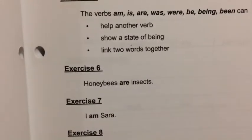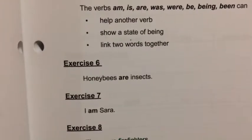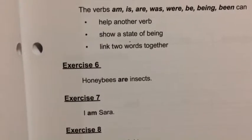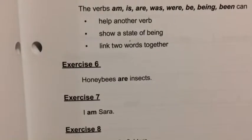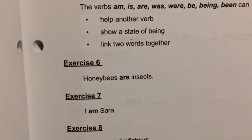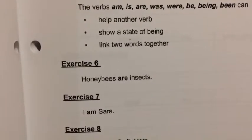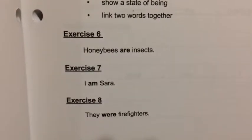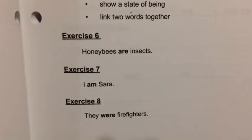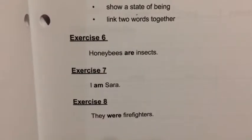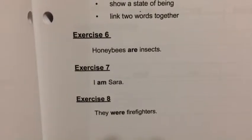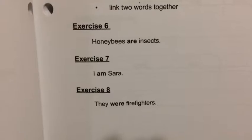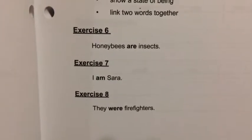Remember in class when I told you about predicate nominatives? These are nouns that are renaming the subject — it gives the subject another name. It's kind of like it's describing it, but it's a noun, not an adjective. Honeybees are insects — insects is a special word called a predicate nominative. I am Sarah — the linking verb is am, and it's linking the subject I with the proper noun Sarah. Sarah renames the subject.